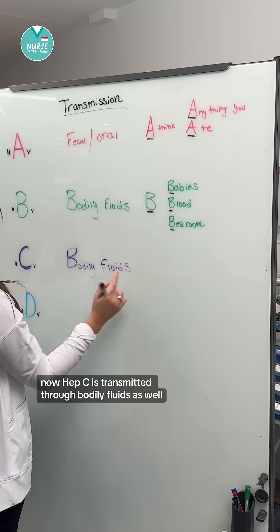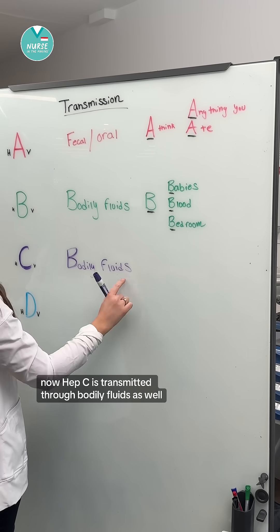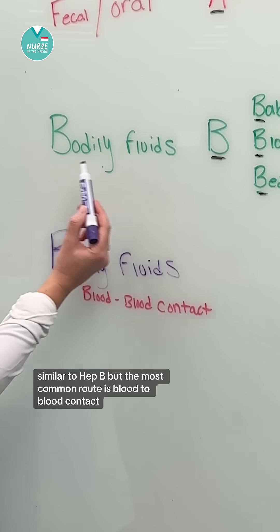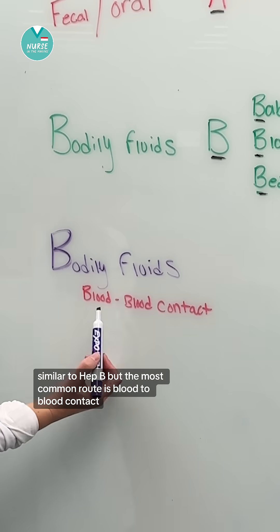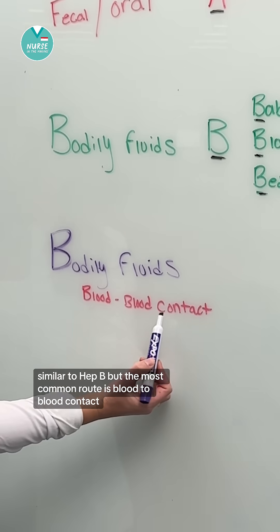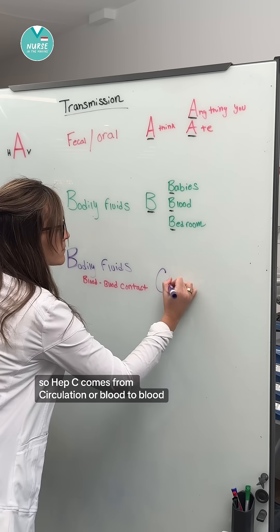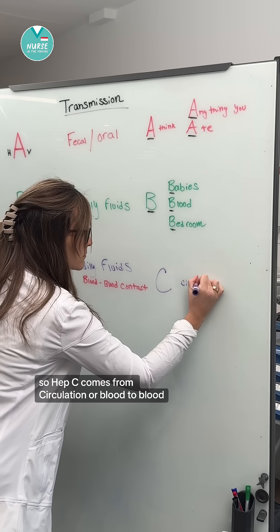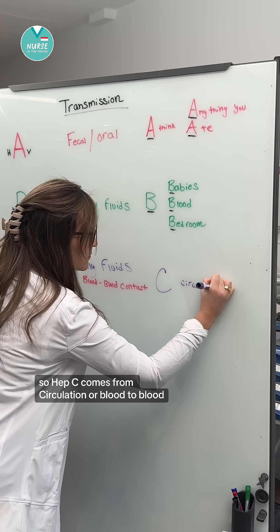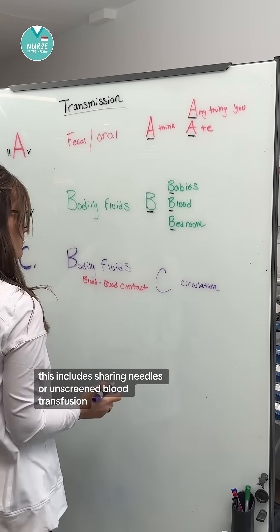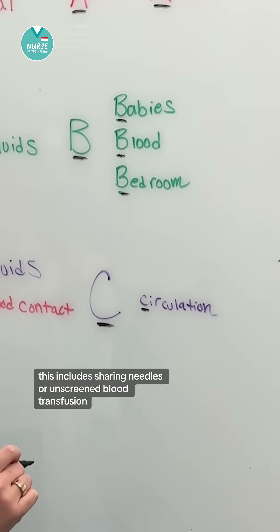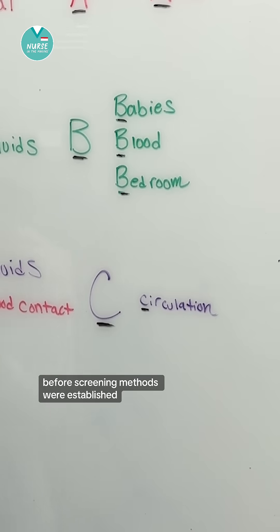Hep C is transmitted through bodily fluids as well, similar to hep B, but the most common route is blood-to-blood contact. So hep C comes from circulation or blood-to-blood. This includes sharing needles or unscreened blood transfusions before screening methods were established.